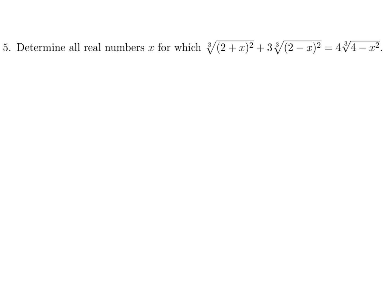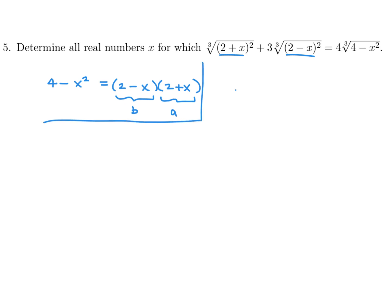Well, there are several ways of doing this. Let me make some substitutions. That 4 − x² immediately jumped out at me because it can be factored into (2 + x)(2 − x). And these factors appear in the other terms. So I'm going to let a = 2 + x and b = 2 − x, and let's put that in.